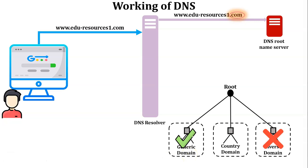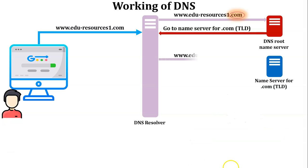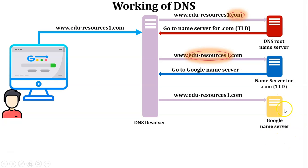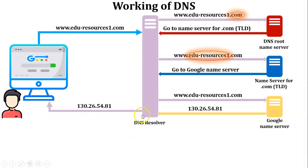The DNS root server passes this URL to the top-level domain .com server. The top-level domain checks the second-level domain — in our example, eduresources1. This second-level domain is registered to the google.com name server, so the top-level domain passes the URL to the Google name server. The Google name server checks this URL, finds the corresponding IP address of that registered website, and passes this IP address back to the DNS resolver.